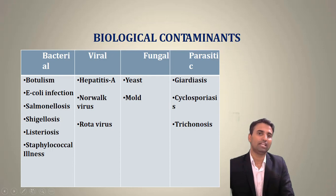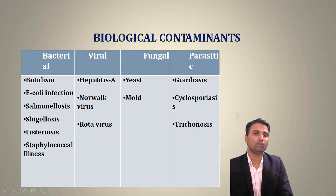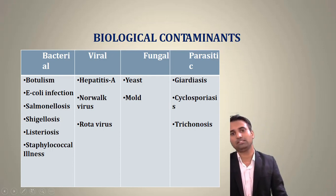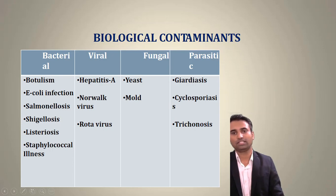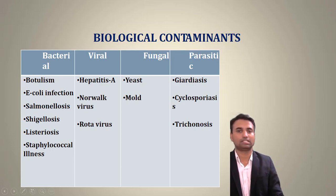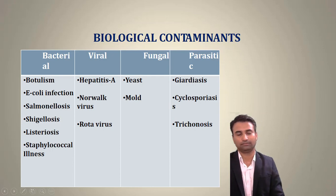For viral infections, the three main ones are Hepatitis A, Norovirus, and Rotavirus. For fungi, we have yeast and mold. For parasites, the three main ones are Giardiasis, Cyclosporiasis, and Trichinosis. We will discuss each of these contaminants one by one.